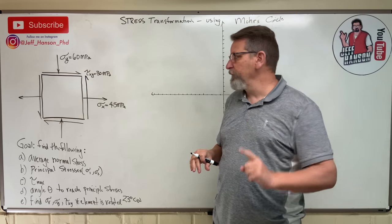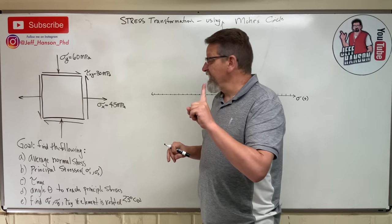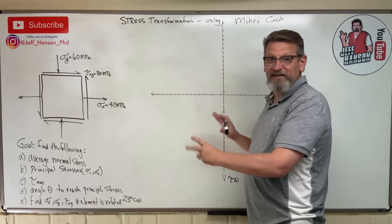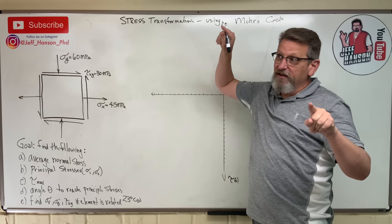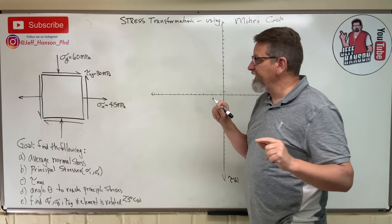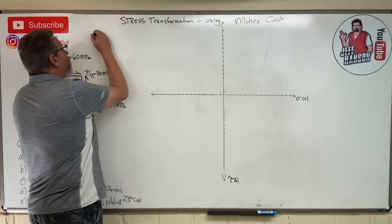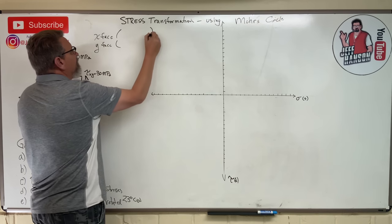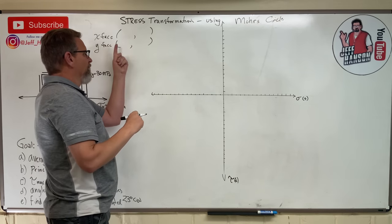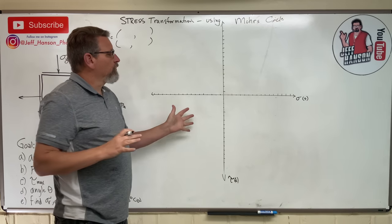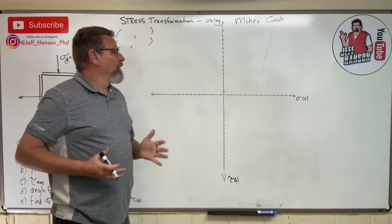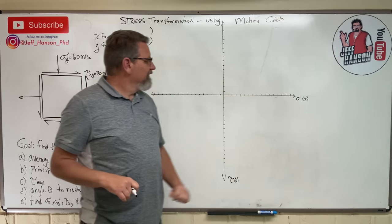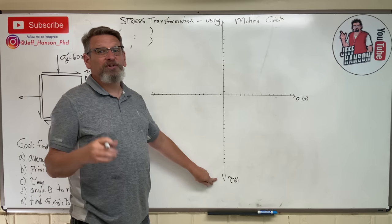I'm going to show you how to do it — it's super easy. First step: we want to get two coordinates. To plot a circle, we need two points. Those two points give us a diameter, and they come from the stress element. You get one point from the x-face, and one point from the y-face. Each point has an x-coordinate and a y-coordinate. In Mohr's Circle world, instead of x and y, we have a sigma axis (normal stress) and a tau axis (shear stress).